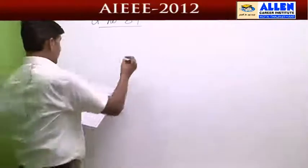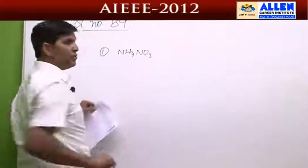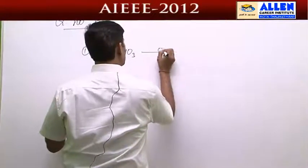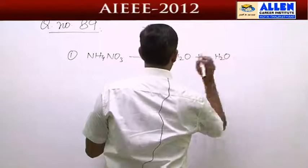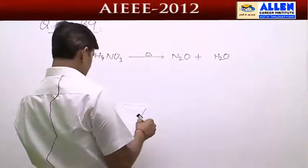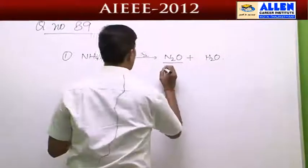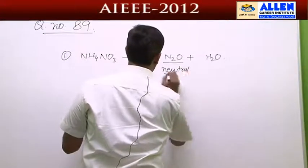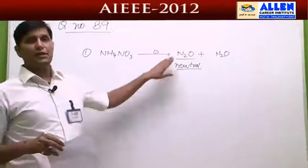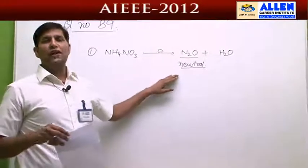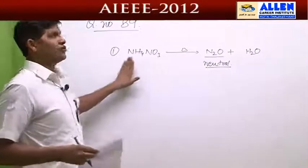The first compound is ammonium nitrate. On thermal decomposition, ammonium nitrate produces nitrous oxide N2O and H2O. Here nitrous oxide is a gas and it is neutral. So it cannot be the answer because the question asks for both a basic as well as an acidic oxide. This option is not fulfilling our requirement and cannot be correct.